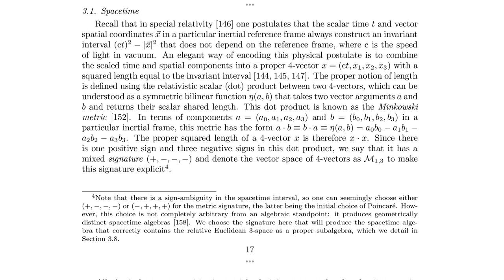Now we have a vector space, because you can add the positions of two events in space-time and subtract them, as long as you understand you're dealing with a scalar time and a vector position. It has the Minkowski metric of (+, −, −, −). The vector space of all these four-vectors they're going to name M(1,3). M(1,3) is the vector space of space-time — an inner product space with a Minkowski metric.